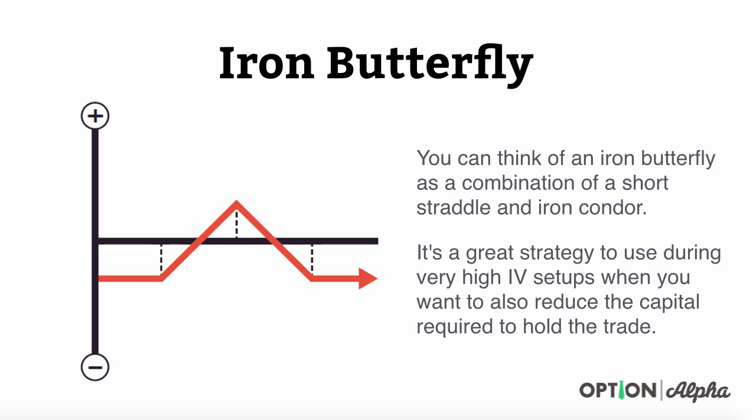You can think of an iron butterfly as a combination of a short straddle and an iron condor. It gets its iron butterfly name because it looks like a butterfly spread, but it's not created using the same butterfly option strikes that you would typically find. It's a great strategy to use during very high implied volatility setups when you want to also reduce the capital required to hold the trade.